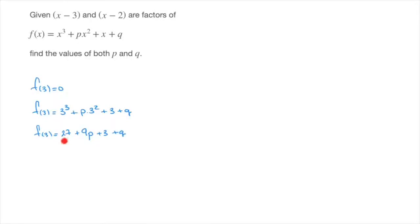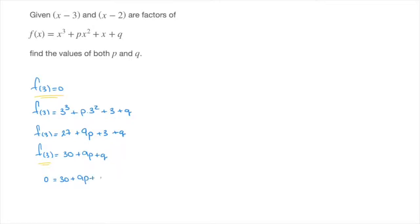Finally, gathering 27 and 3, we can see that f of 3 must equal 30 plus 9p plus q. But since f of 3 equals 0, we can replace the left-hand side by 0, leading us to 0 equals 30 plus 9p plus q, which we can rearrange to write 9p plus q equals negative 30.